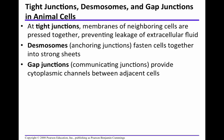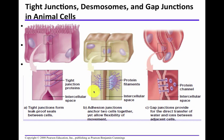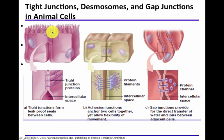Gap junctions provide cytoplasmic channels between adjacent cells, allowing the cytoplasm of adjacent cells to communicate. Looking at a diagram, tight junctions are shown between two cells. The surface convolutions visible here are like the microvilli we looked at previously, providing increased surface area and therefore an increased surface-area-to-volume ratio.